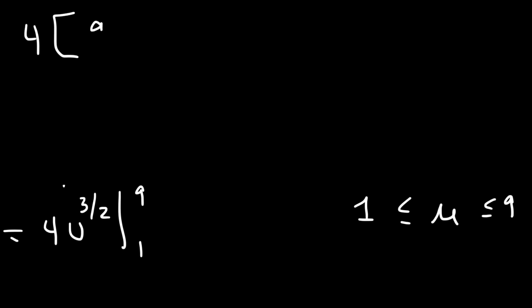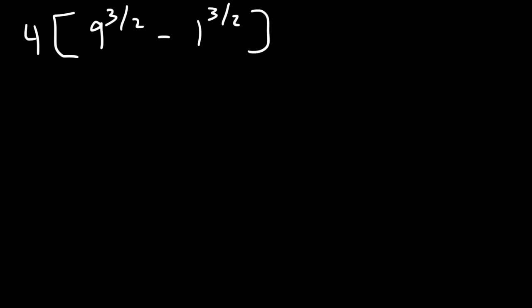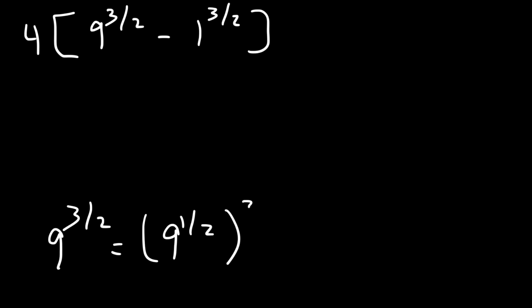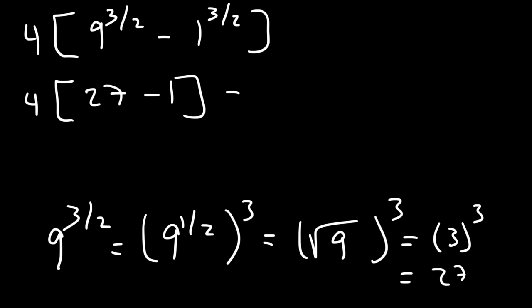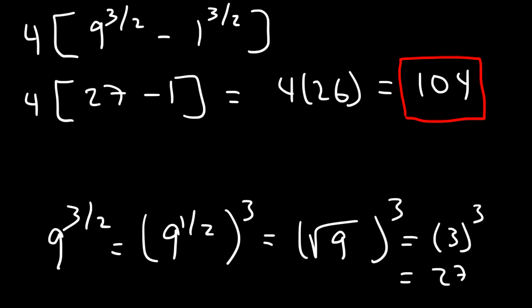So if we plug in 9, it's going to be 9 to the 3/2, and then minus 1 to the 3/2. So what is 9 raised to the 3/2? This is the same as 9 raised to the 1/2, raised to the 3rd power. 9 to the 1/2 is the square root of 9, and the square root of 9 is 3. 3 to the 3rd power is 27. So 9 raised to the 3/2 is 27. And 27 minus 1 is 26. And 26 times 4 is 104. That is the answer — the length of the arc as t increases from 0 to the square root of 8.